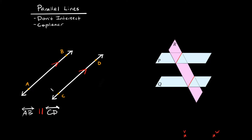Just like we can have two parallel lines, we can also have two parallel planes. Here you can see that plane P and plane Q are different planes — P is above Q — and they are parallel: these two planes can extend forever and they will never intersect.